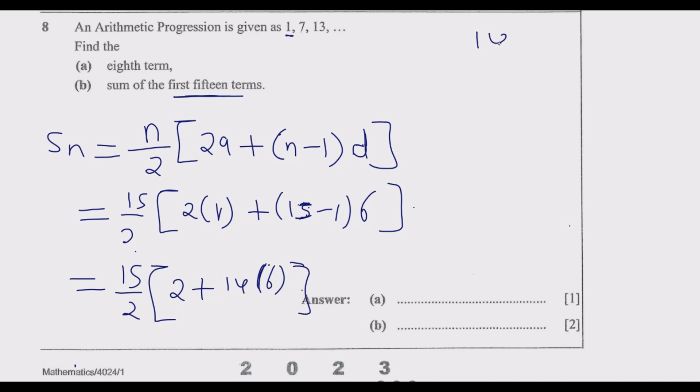So I'm going to have 15/2 multiplied by [2 + 14 × 6]. Now what is critical is your multiplication. I'm going to have 14 multiplied by 6. 6 times 4 is 24, so we write 4 and carry 2. Then 6 times 1 is 6, plus 2 is 8. So we have 84. 84 plus 2 gives us 86. So it will be 15/2 times 86.